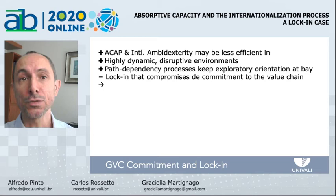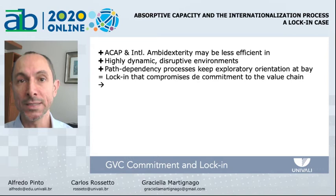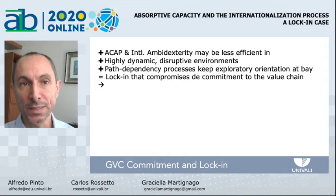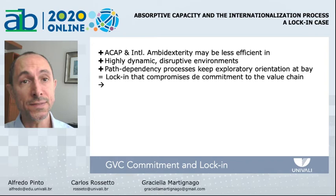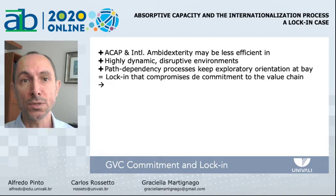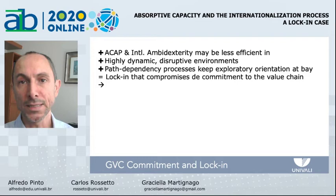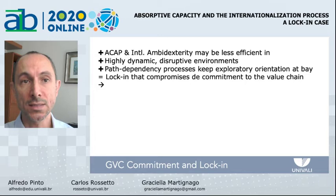Dynamic capabilities that guaranteed competitive advantages throughout ZEN's international history are now, under a highly dynamic environment, failing to create competitive advantage to sustain international commitment. The virtual cycle of knowledge creation and international commitment, in which self-reinforcing mechanisms were in place, led to a path-dependent trajectory that imprinted cognitive limitations in the corporate culture. Even having acknowledged the technology disruption scenario in the auto industry and incrementing investments in R&D, the company has not been able to develop exploratory radical innovation capabilities in more than 10 years of efforts.